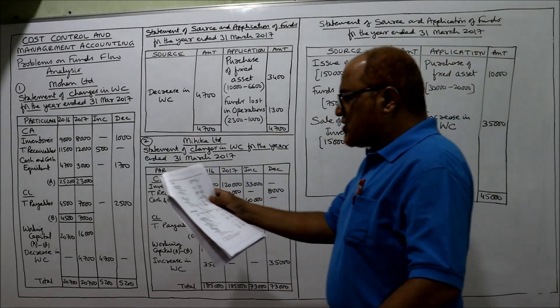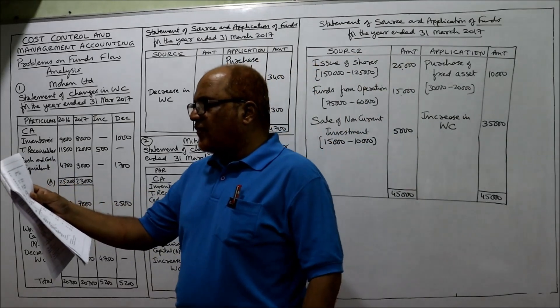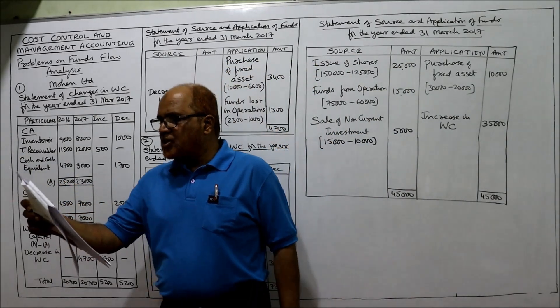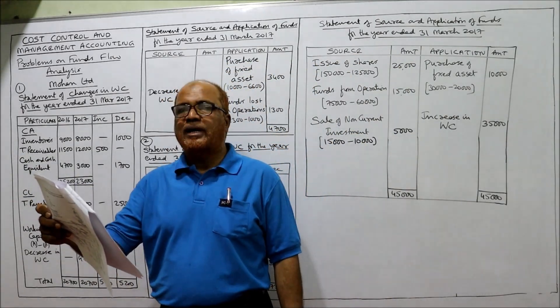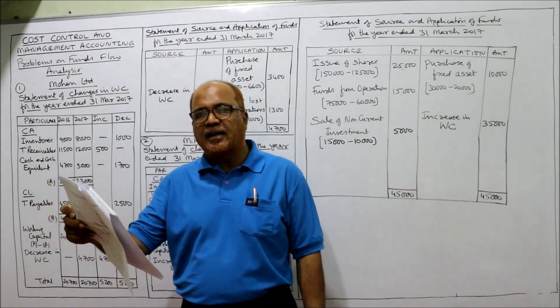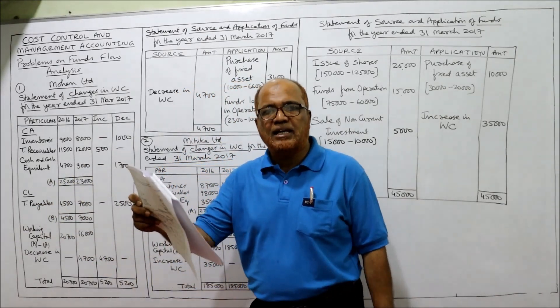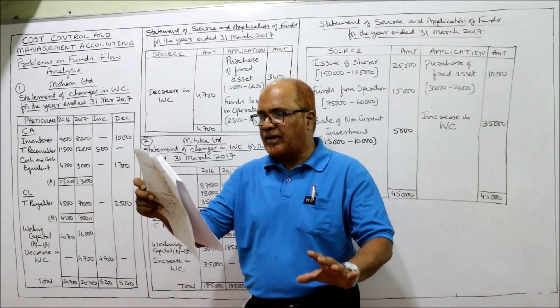Let's see the first two problems. You are given the following comparative balance sheet of Mohan Limited. Particulars are given for last year 2016 and current year 2017.